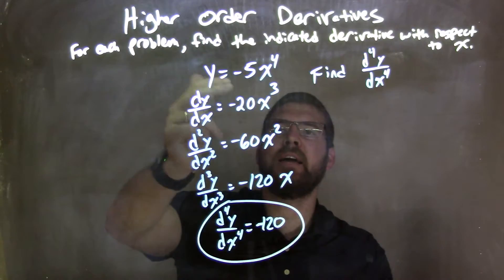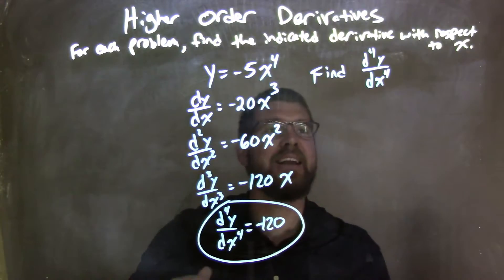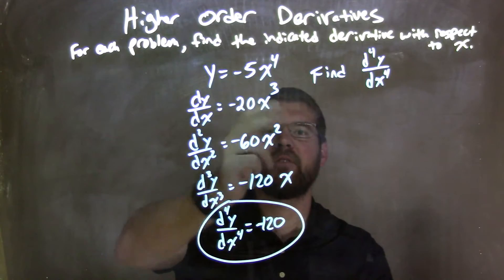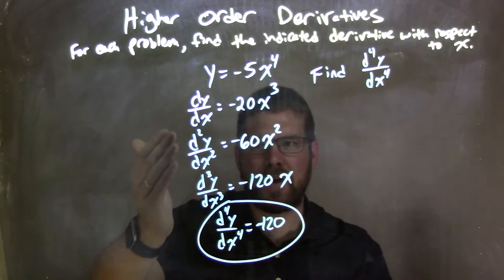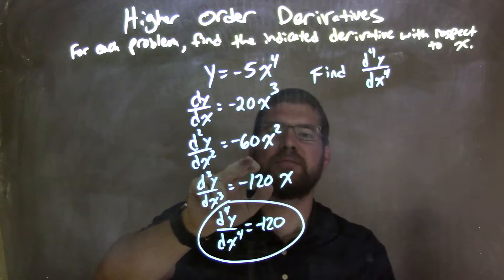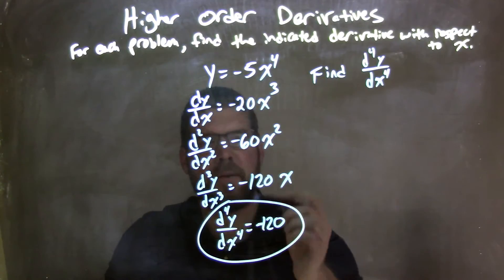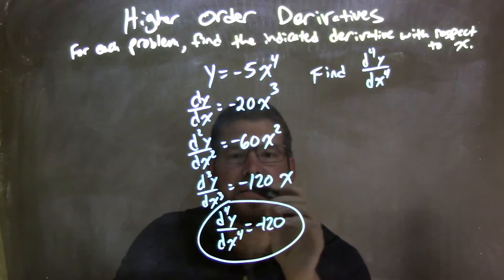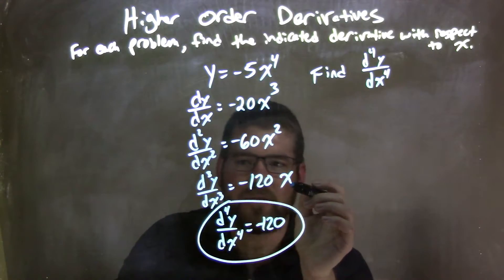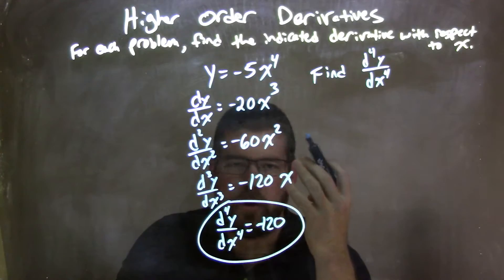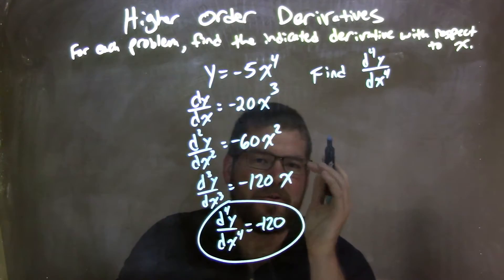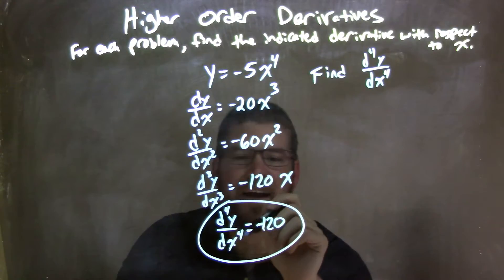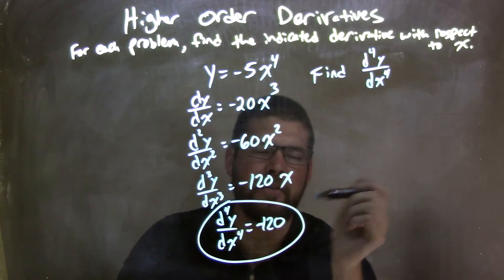Let's recap. We're given y equals negative 5x to the 4th, and we need to find the 4th derivative. Using the power rule: first derivative is negative 20x to the 3rd; second derivative is negative 60x squared; third derivative is negative 120x; and finally, applying the power rule a 4th time gives us d to the 4th power y over dx to the 4th equals negative 120.